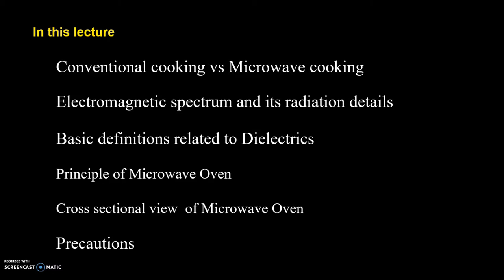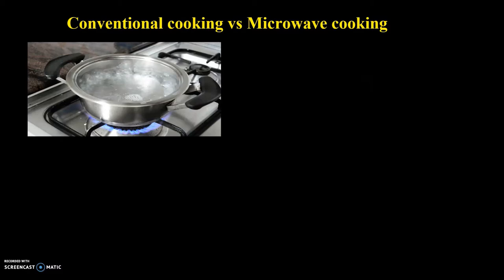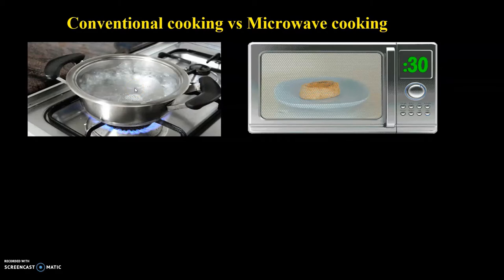Let us understand the difference between conventional cooking and microwave cooking methods. In the conventional heating process, we take any material in a vessel and place it on the stove; the heat gets transferred by the conduction process and the material gets heated up. Whereas in the case of a microwave oven, we take a polar-contained material on a ceramic plate and place it inside the microwave oven, and due to the internal heating process, the food gets heated up.